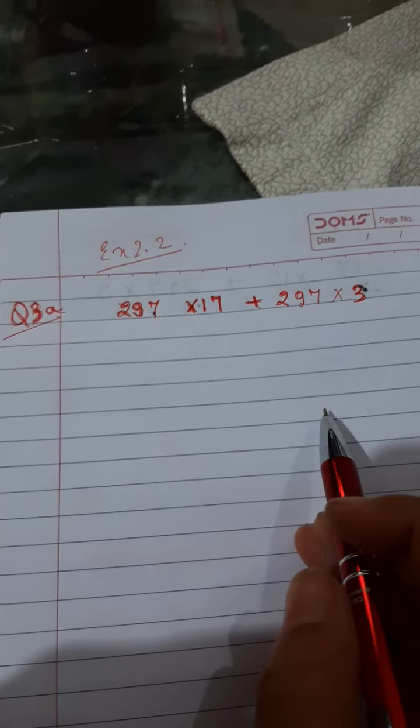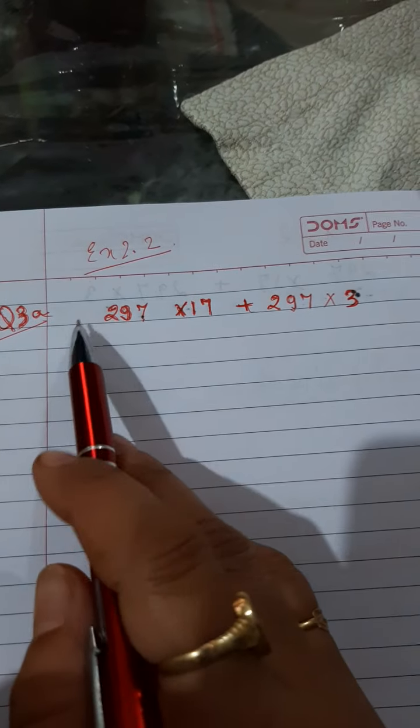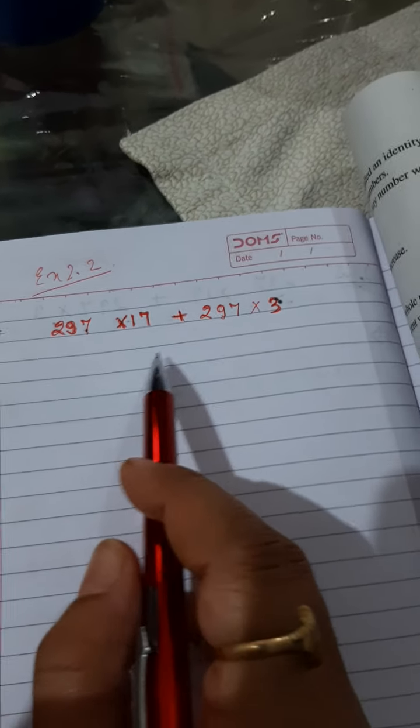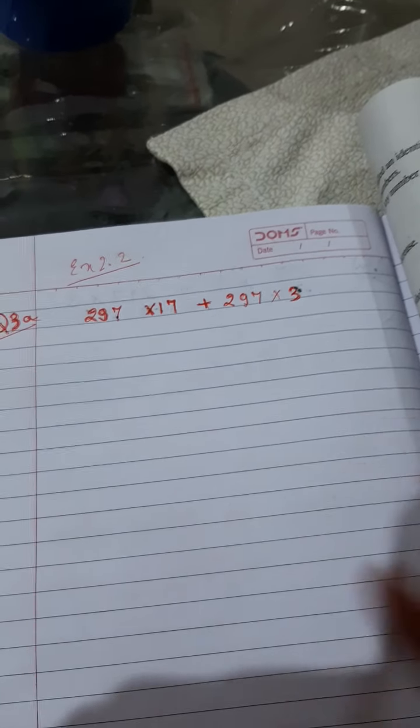Now, see children, in the third question, first part, 297 × 17 plus 297 × 3.